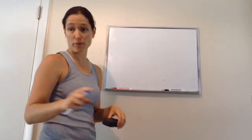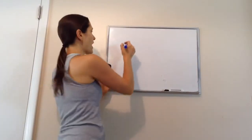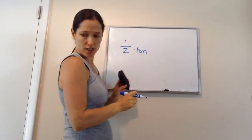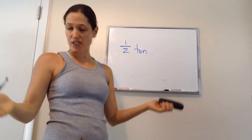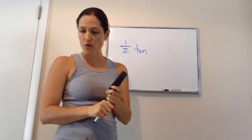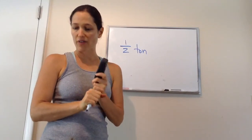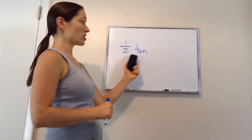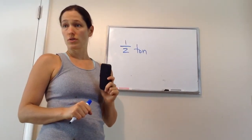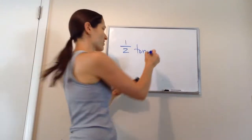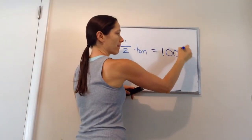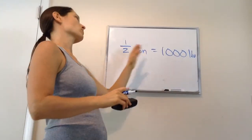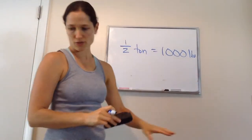Now, so answer this question for me, knowing what I just shared with you. A half-ton truck can carry a load of half a ton. What is the load capacity in pounds of a half-ton pickup truck? How much is a half-ton in pounds? 1,000 pounds. Very good. See how you did that? 1,000 pounds. A half-ton is 1,000 pounds. One ton is 2,000 pounds. Very good.